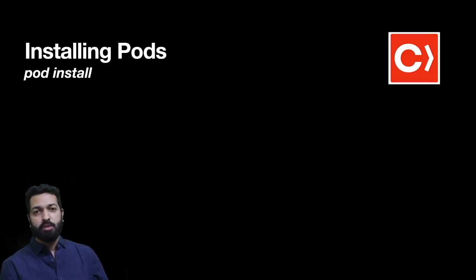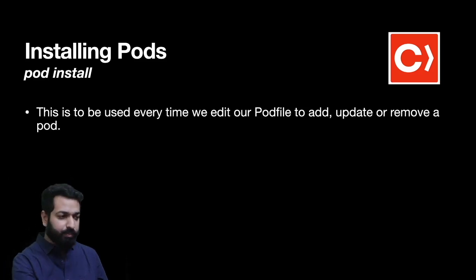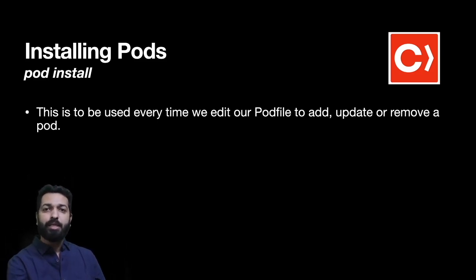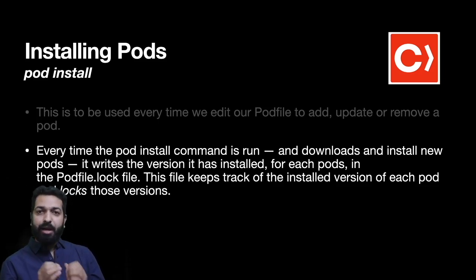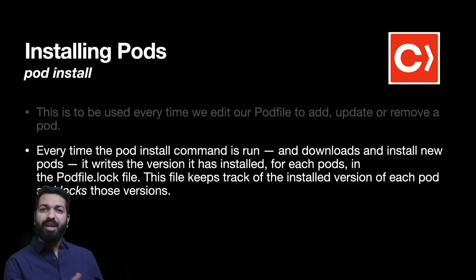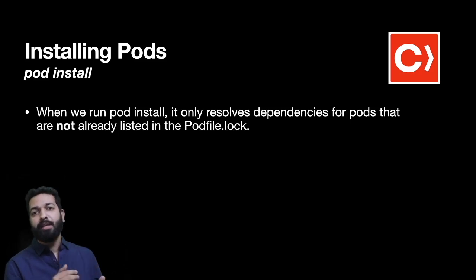Now let's see how pods are installed. After installing CocoaPods, when we run pod init and get a Podfile, we write some pods in it and then run pod install to install those pods. This command is used whenever some change happens in our Podfile — whenever we add or remove a dependency, or update the version of any dependency, we use pod install to download that dependency from the CocoaPods trunk. Every time pod install is run and a dependency is downloaded, its entry is recorded in Podfile.lock, which keeps track of installed dependencies and importantly tracks the versions of those pods.